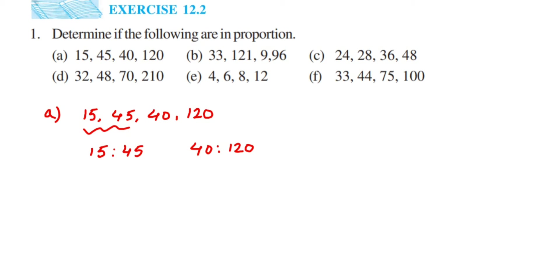Ratios are always expressed in lowest or reduced form, so convert to lowest form. For 15 by 45: cancel in the five table — five threes are 15, five nines are 45 — giving us 3 and 9. Then cancel in the three table — three ones are 3, three threes are 9 — so we get 1 by 3.